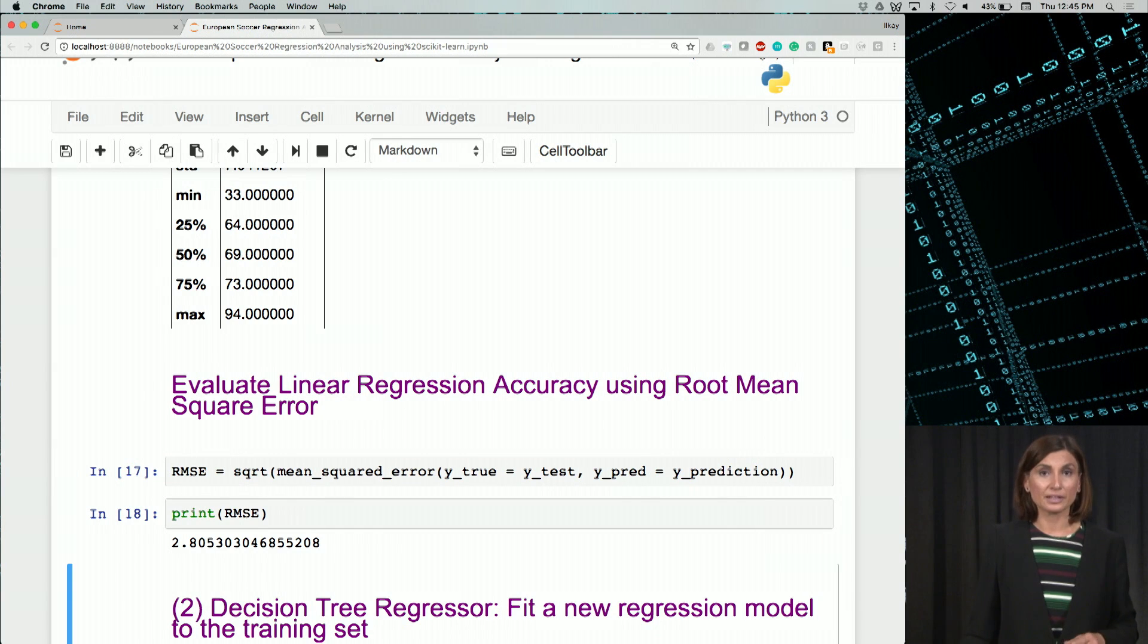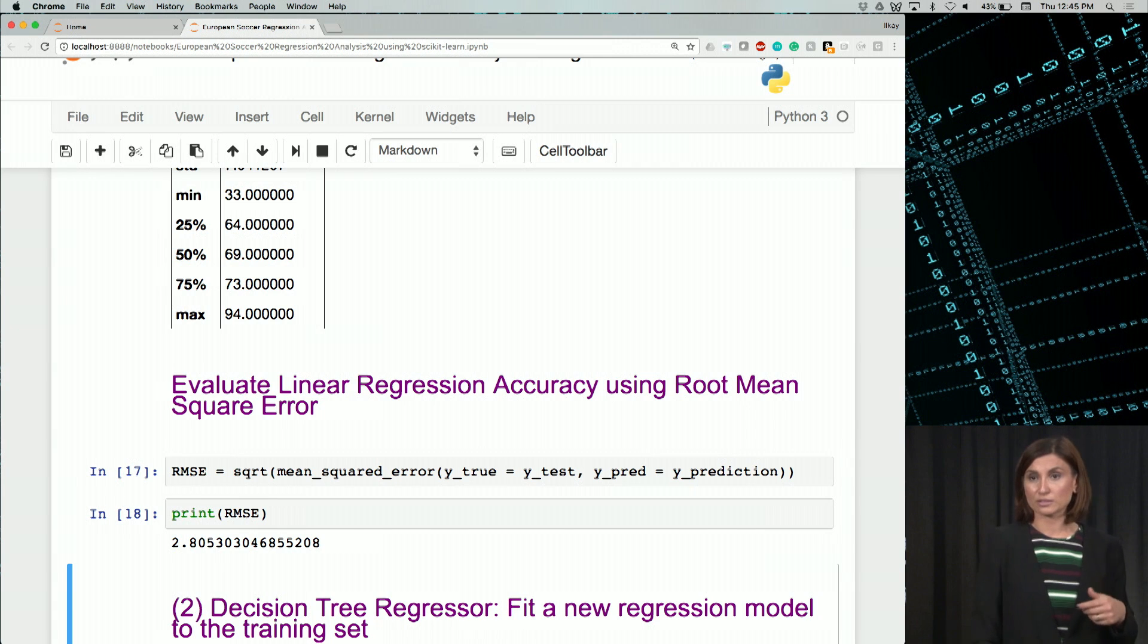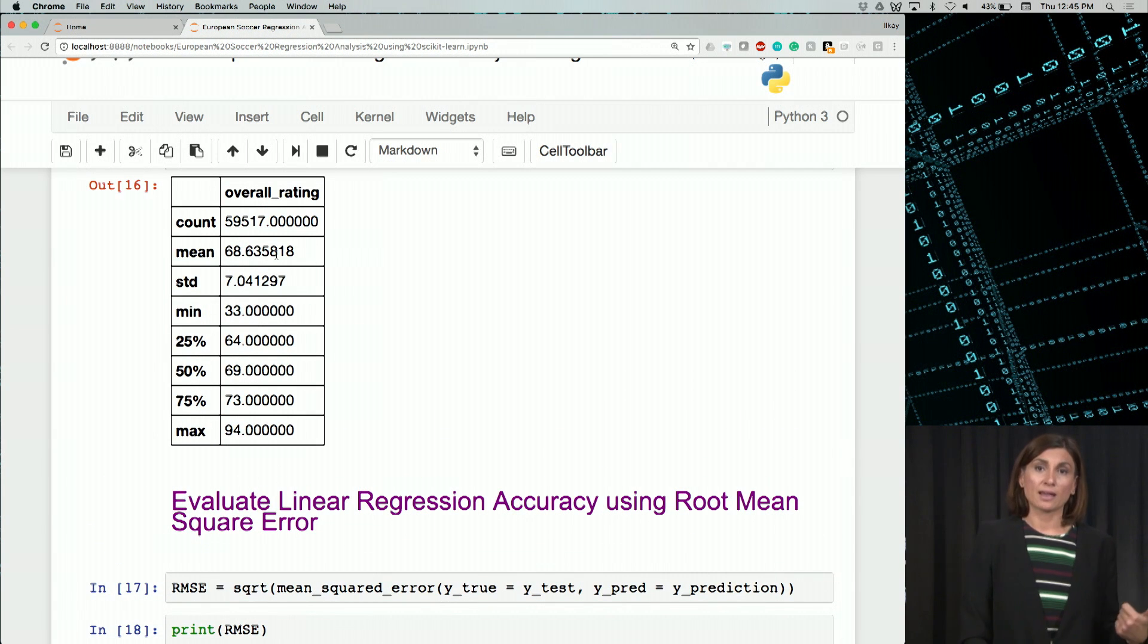So when we compute RMSE and print it out, we see that the linear model gives us an RMSE of 2.8. This is a good start, since the range of overall rating is from 30 through to 94, with a mean of, as you would remember, approximately 68.